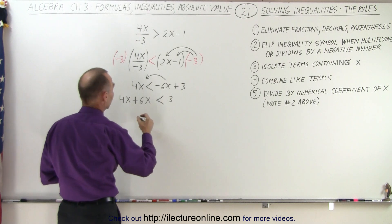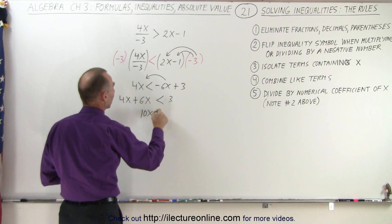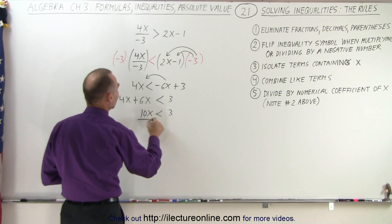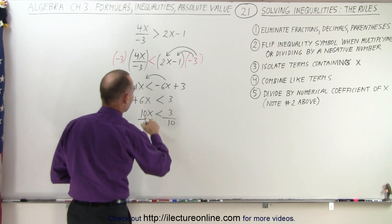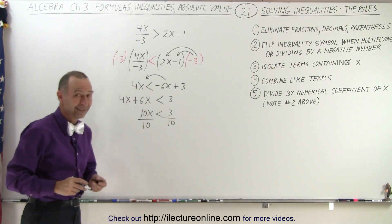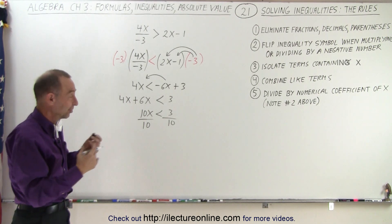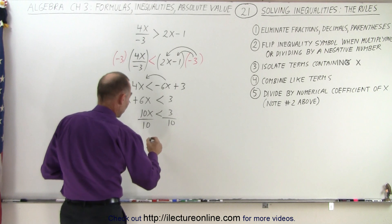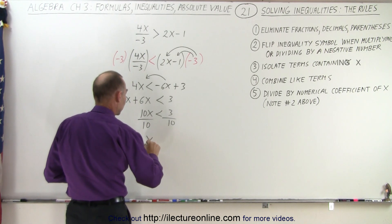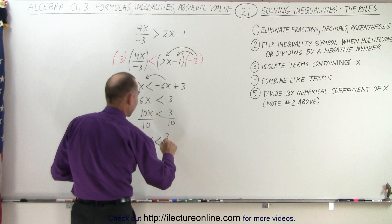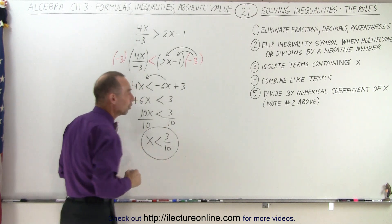Combine like terms, step number four, that's 10x less than 3. And now we divide both sides of the inequality by the coefficient, the numerical coefficient of x. Since it's a positive 10, we don't have to flip the inequality sign again. So that could happen here again as well, I should say. And so x is therefore smaller than 3 tenths. And that would then be the solution.